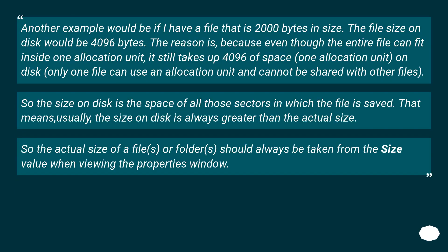Another example: if I have a file that is 2000 bytes in size, the file size on disk would be 4096 bytes. The reason is that even though the entire file can fit inside one allocation unit, it still takes up 4096 bytes of space — one allocation unit. On disk, only one file can use an allocation unit; it cannot be shared with other files.